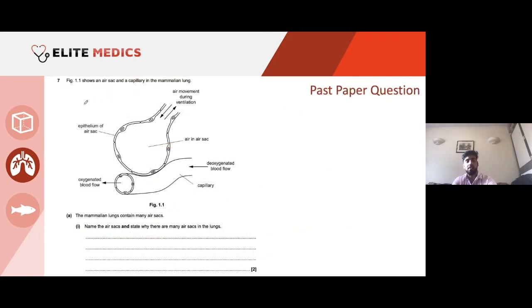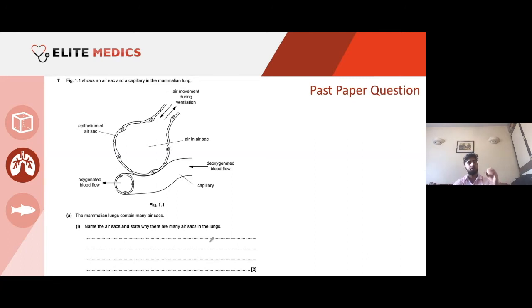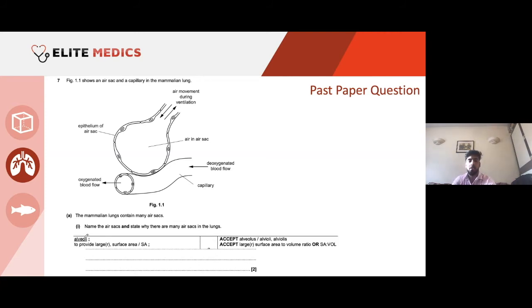Question 7a: Name the air sacs and state why there are many air sacs in the lungs. The answer to 'name the air sacs' is easy — alveoli. Why are there many air sacs? Each air sac is quite small but has a large surface area to volume ratio. To achieve maximum gas exchange efficiency, we just duplicate something that works — having millions of them means gas exchange can be increased many times over. So: alveoli, providing a much larger surface area.